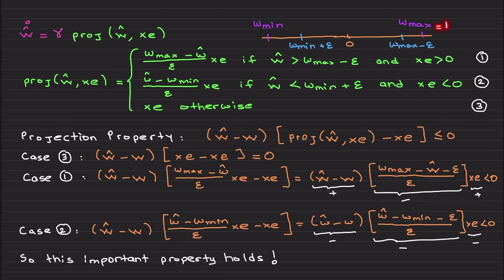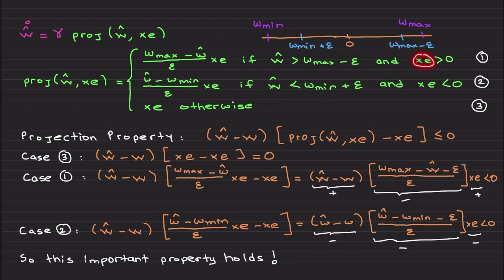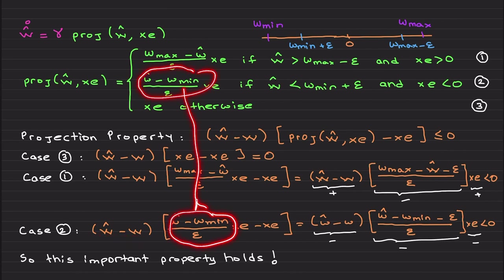Let's give some numbers: w_max = 1, ε = 0.1, so the boundary is 0.9. Let's say ŵ = 0.95. Inserting: w_max minus ŵ minus ε gives 1 − 0.95 − 0.1, which is a negative term. Case 1 is activated when x·e is positive, so multiplying negative by positive by positive gives a negative result. We have a negative contribution from Case 1.